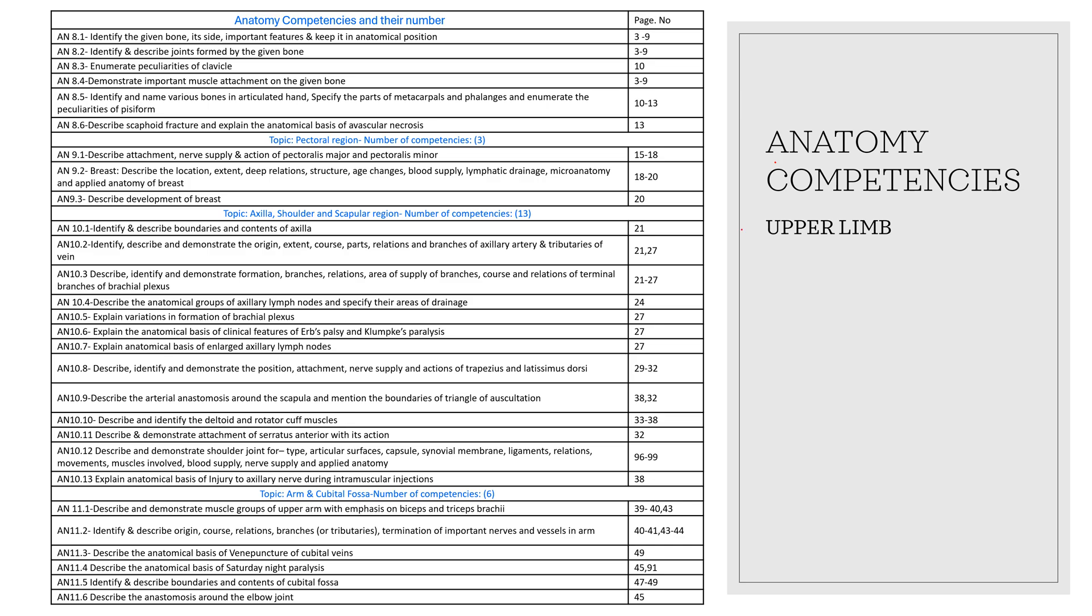It is given in detail according to the anatomy competencies given by the NMC for each region. Next to the contents page, the anatomy competencies the student should learn are given with page numbers so they can easily go to this table and see the answers for the competencies. For example, in the arm, describe and demonstrate muscles or groups of upper arm with emphasis on biceps and triceps brachii is given in page numbers 39 to 40 and 43. Describe the anatomical basis of venipuncture of the cubital veins is given on page 49.